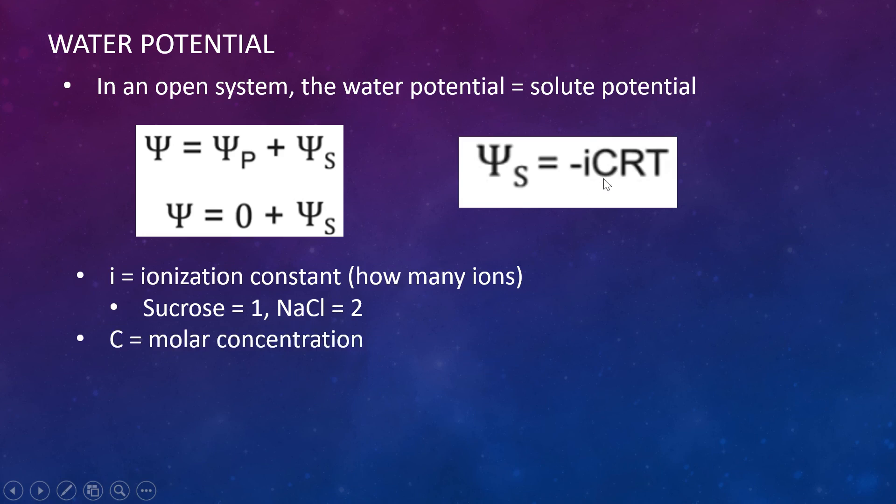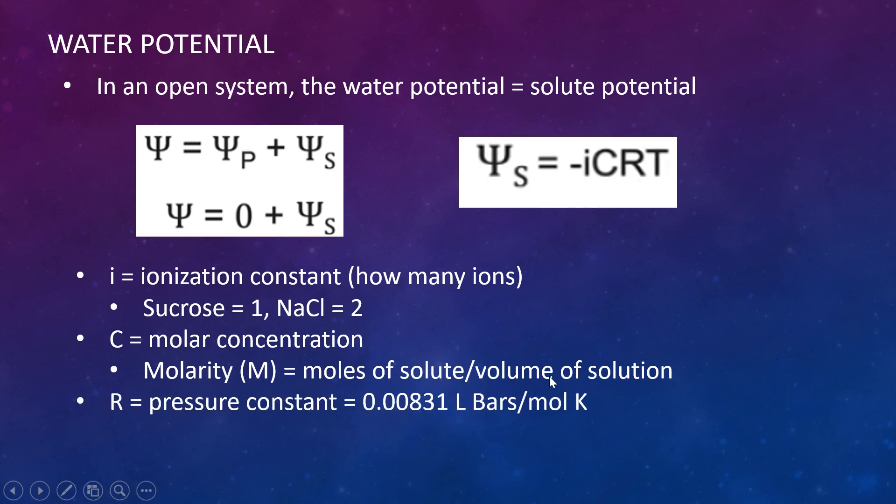Next C is the molar concentration, and they will usually give you these numbers that you'll be plugging into the equation. It's usually in moles, and that's the moles of solute per volume of solution. R is a constant, so you'll be given that constant. You don't have to memorize it or anything. And then T is temperature. Big thing is it needs to be in Kelvin. So Kelvin is our Celsius plus 273 is our Kelvin.